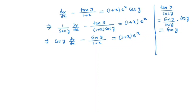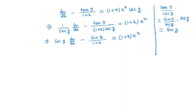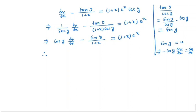Then notice that the derivative of sin y is cos y. So we will make a transformation of variable: let sin y = u. That means cos y · dy/dx = du/dx, so cos y · dy/dx is du/dx, and we can write it as minus du/dx where needed.